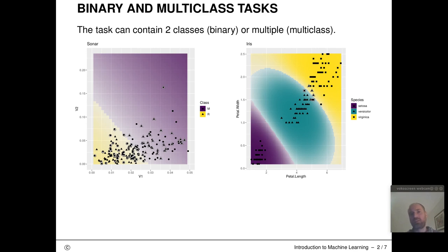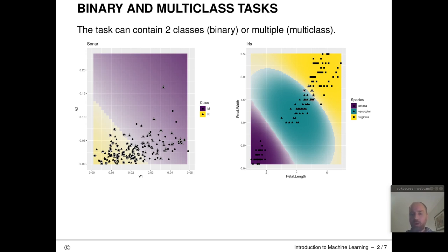The two-class case is usually a bit simpler to discuss for some methods. For logistic regression, for example, it's much more natural to define for two classes. Methods like k-nearest neighbor or a decision tree really don't care how many classes there are, and you don't have to adapt the algorithm at all to work on the multi-class case.